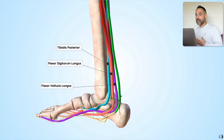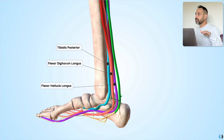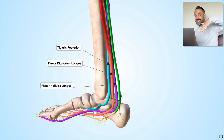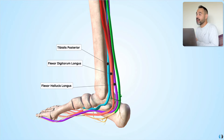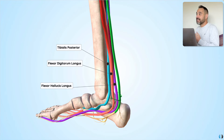Therefore, when your patients have sciatica, look out for weakness in plantar flexion or foot flexion movements. For example, when you ask them to do a heel raise and they can't push up onto their toes — now you know why. Those muscles are innervated by the tibial nerve, a branch of the sciatic nerve, and when the sciatic nerve is dysfunctional, those muscles don't get the strength they need.